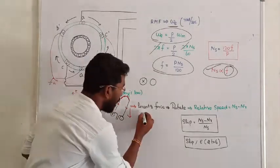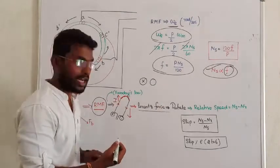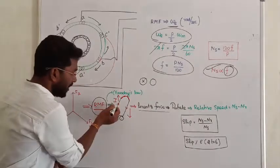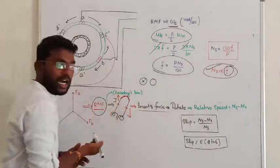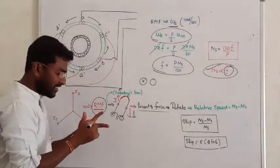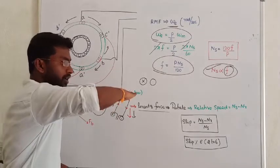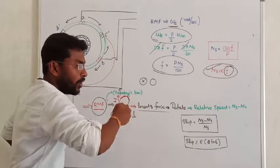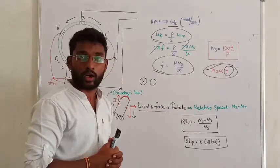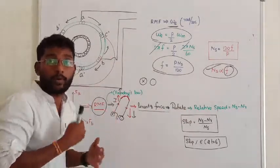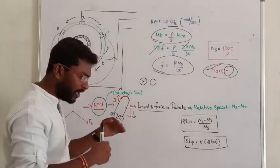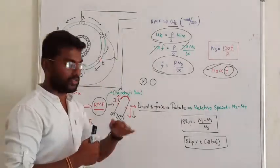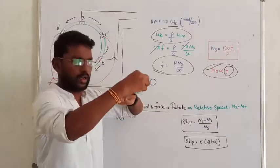According to Lorentz force, the current-carrying conductors in the magnetic field develop a relative torque. One torque acts in the upward direction and another in the downward direction. As a result, the rotor connector starts rotating, slowly following the rotating magnetic field. The rotor rotates in the same direction as the rotating magnetic field.